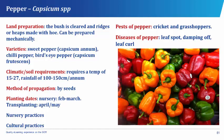Cultural practices of pepper planting involve weeding, mulching, and fertilizer application. The pests that attack pepper are the crickets and grasshoppers. While the diseases suffered by pepper are the leaf spot, damping off, and the leaf curl.